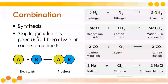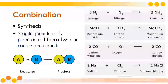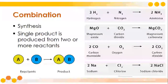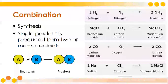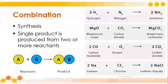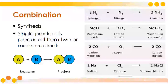Combination or synthesis reaction is when a single product is produced from two or more reactants. Looking at this formula: we have reactant A — it can be a compound or an element — it reacts with reactant B, which can also be a compound or an element, and it will produce a product that is simply the combination of both. So it's simply A plus B will produce AB.